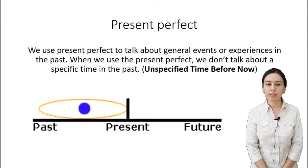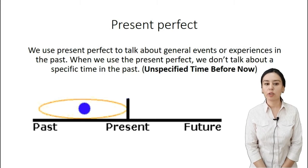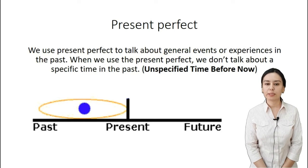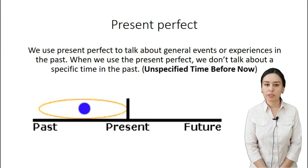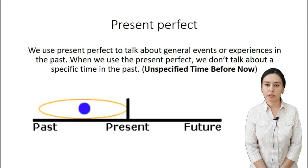First of all, grammar: present perfect tense. Present perfect tense is usually used to talk about general events and experiences in the past, but the time is not specific. That's why it's called unspecified time before now. Something happened in the past — between past and present — so it happened in the past but has a result in the present. For this kind of event we use present perfect tense.